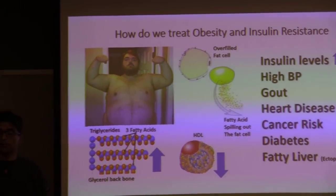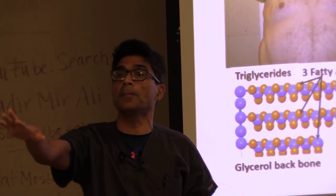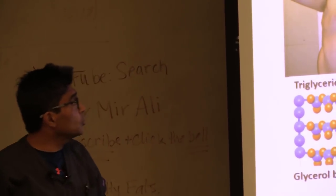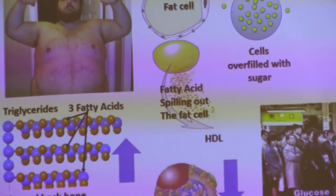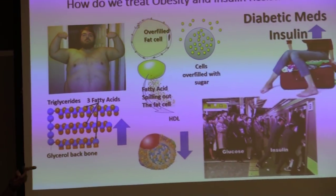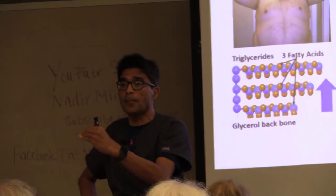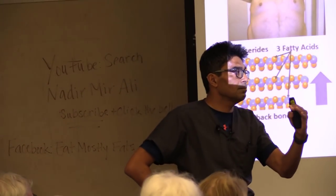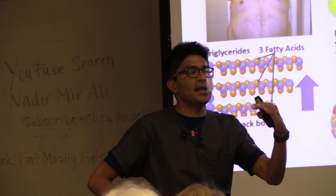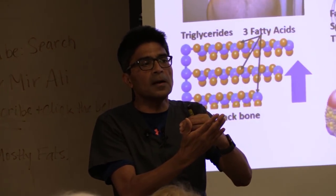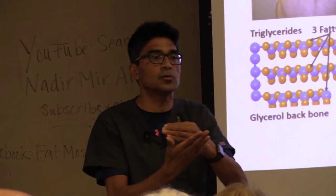High blood pressure is directly caused by high insulin levels — put someone with high blood pressure on a low-carb diet and their blood pressure will drop in a week, better than medications. As medical professionals, I used to give diabetic medications: sulfonylureas increase insulin levels, and type 2 diabetics are given large amounts of insulin which also increase insulin levels. I have seen astronomically high insulin levels in type 2 diabetics who are getting insulin.